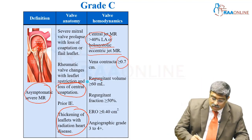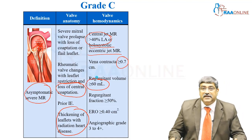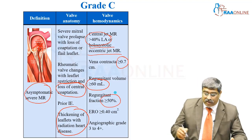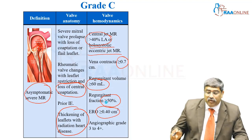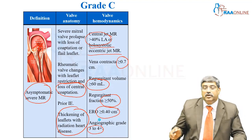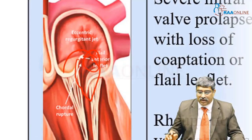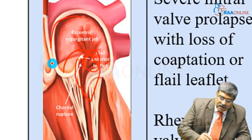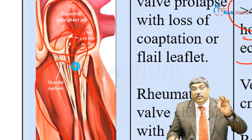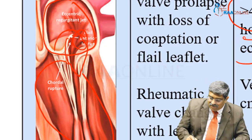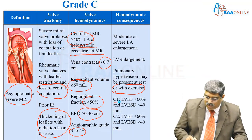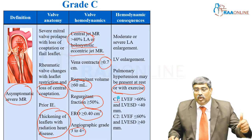In Grade C, the regurgitation volume is greater than 60 ml, regurgitant fraction greater than 50%, orifice area greater than 0.4 cm², and angiographic grade is 3 to 4 plus. There is LA and LV enlargement, and pulmonary hypertension is usually present with severe exertion. Grade C is further subdivided into C1 and C2.